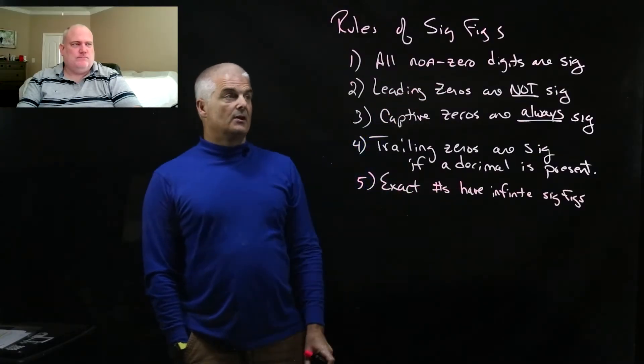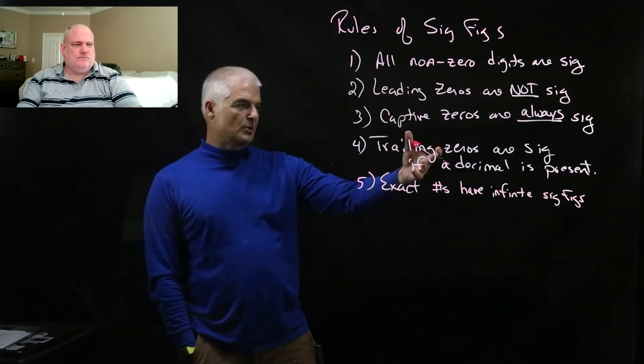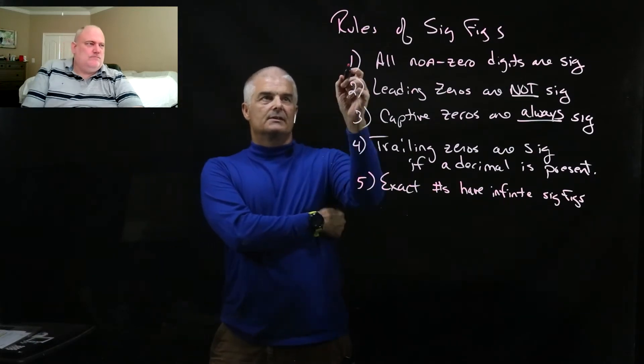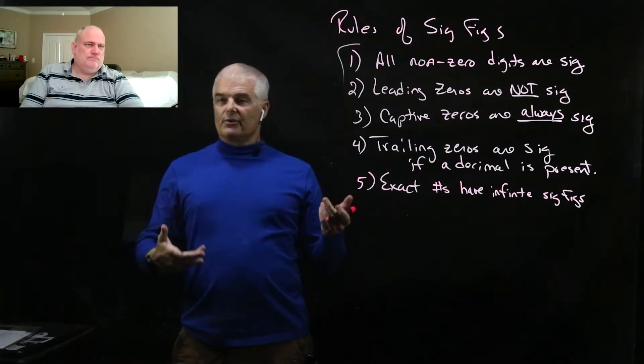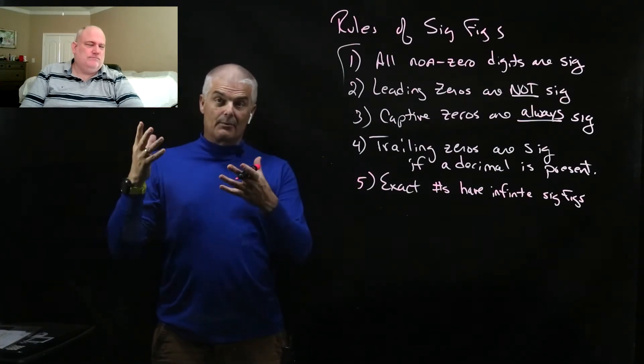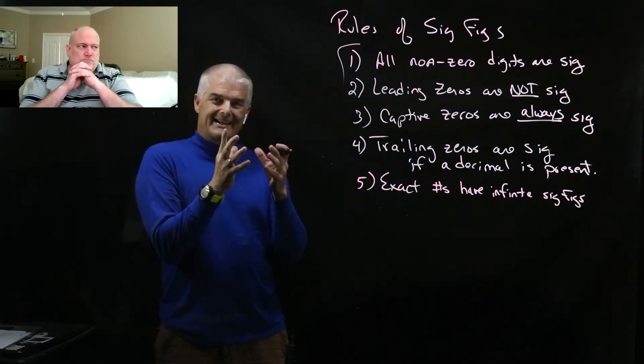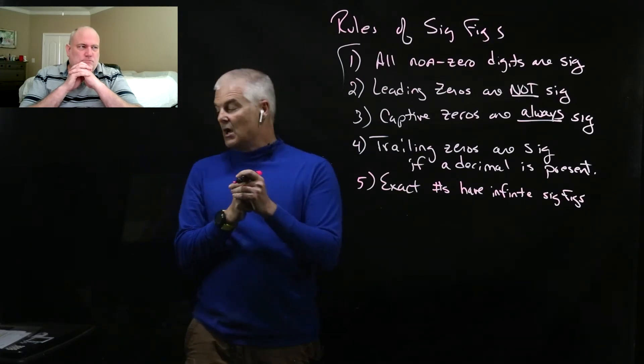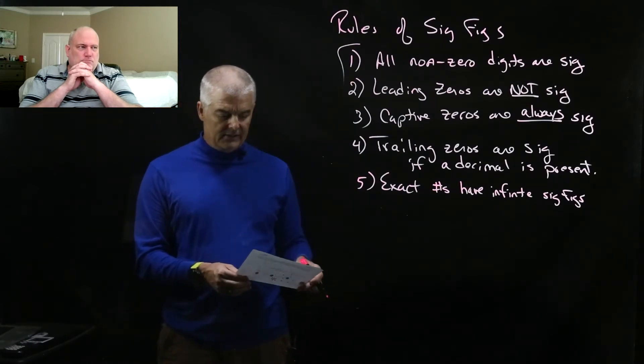So here we have five rules, right? All non-zero digits are significant. Leading zeros are not significant. Captive zeros are always significant. Trailing zeros are significant if a decimal is present. And exact numbers have an infinite number of significant digits. You might be going, what the heck are they talking about? I thought numbers were numbers. No, they're not, because they represent measurements, like we've been talking about. You saw on the video, right? We had the gummy bears and the gummy bears had the same mass every time we put them on the different scale. And so we want to indicate how well we know their mass or whatever it is that we're measuring. So what we want to do is just do several examples, and what we want to learn is how to count significant digits. Does that make sense?